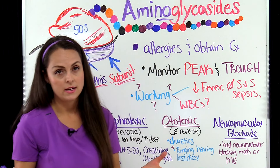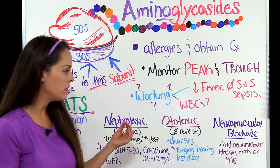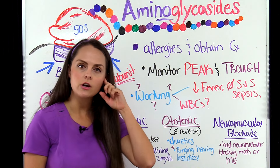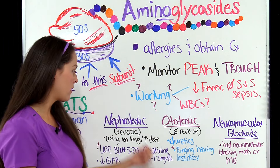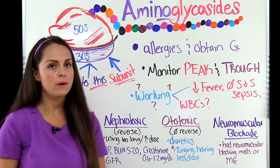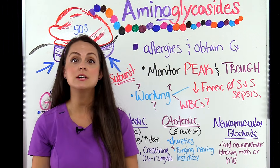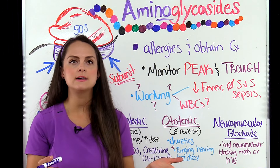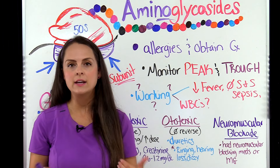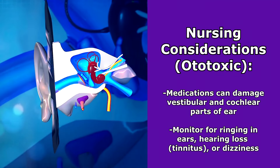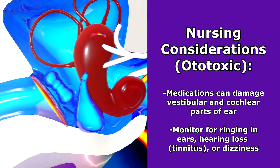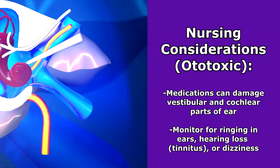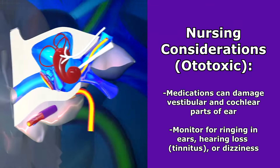The next type of toxicity is ototoxicity — oto means ears — specifically affecting the hearing structures. Unfortunately, if your patient experiences this, it is not likely to be reversed. Risk increases if they're also taking loop diuretics like furosemide. Because this medication can damage the vestibular and cochlear parts of the ears, tell your patient to monitor and report any ringing in the ear, hearing loss, or dizziness, as these could be signs the medication is affecting the ears.